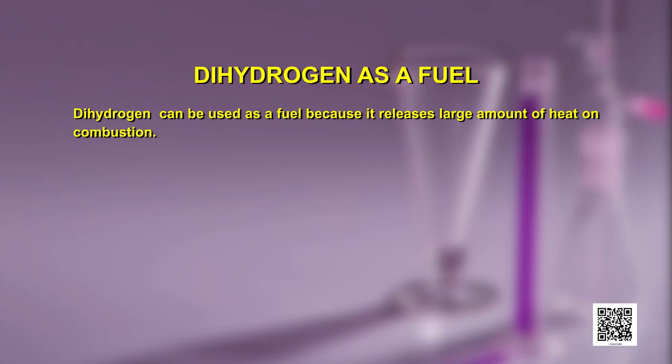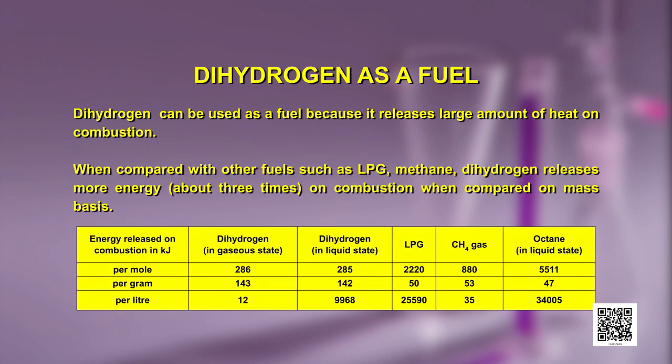After studying these two important compounds of hydrogen — hydrogen peroxide and D₂O — let us now come back to dihydrogen. We discussed in episode 1 that it can be used as a fuel because it releases a large amount of heat on combustion. When compared with other fuels such as LPG and methane, dihydrogen releases about 3 times more energy on combustion on a mass basis.